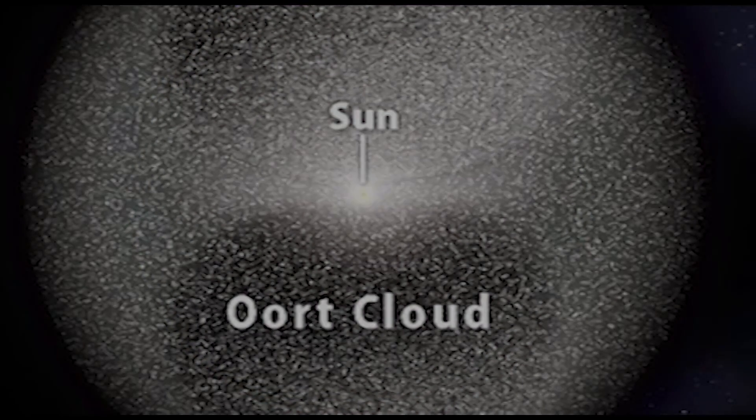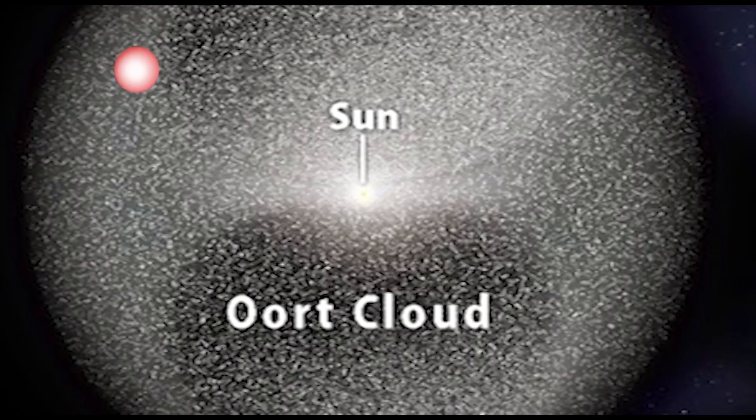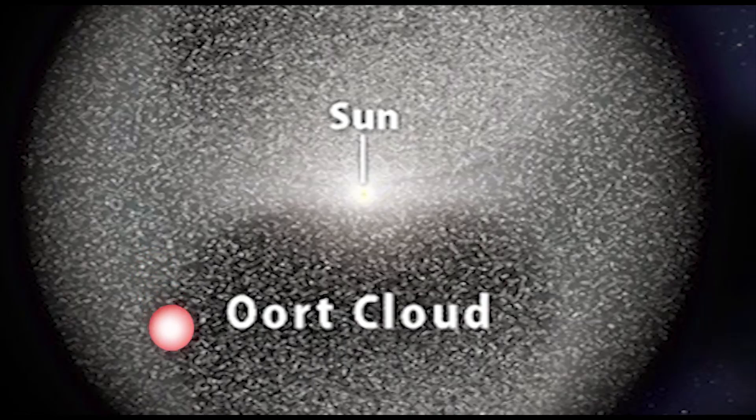Astronomers discovered that the dim stars passed a very close 0.8 light years from the sun. In comparison, our closest neighboring star Proxima Centauri is 4.2 light years away.